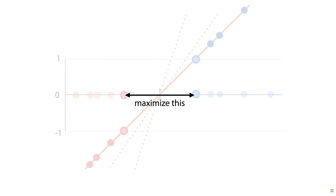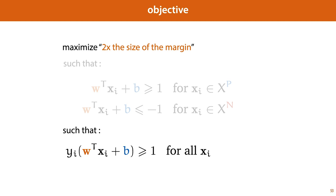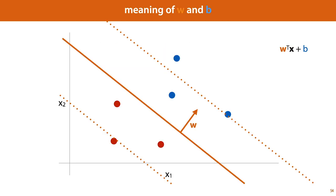To summarize, we want to maximize the distance between where the hyperplane hits minus one and where it hits one, while keeping positive points above one and negative points below minus one. We can simplify the two constraints into a single constraint by introducing a label y_i, which is minus one for negative points and plus one for positive points. If we multiply that by the output of our linear function, then in both cases the left-hand side should be larger than or equal to one, allowing us to express both constraints as one.